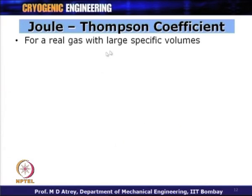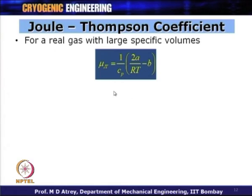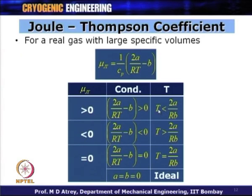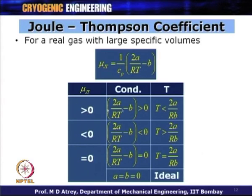If we want mu_JT to be greater than zero, the temperature must be less than 2A/(RB). If temperature is greater than 2A/(RB), expansion results in heating. If temperature equals 2A/(RB), mu_JT equals zero — this is the inversion temperature. If A equals B equals zero, everything reduces to the ideal gas case where mu_JT is zero.